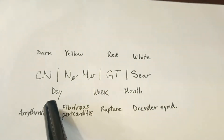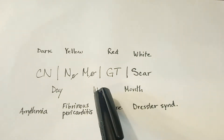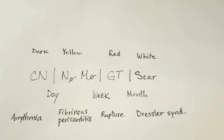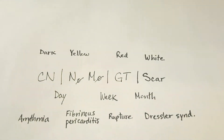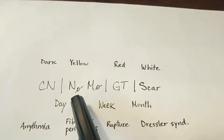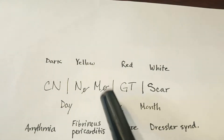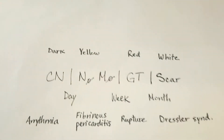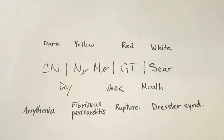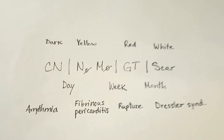The second event, within a day to a week, is going to bring in inflammatory cells. That includes neutrophils first, followed by macrophages, and that's going to give a yellow pallor appearance to the heart.